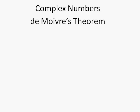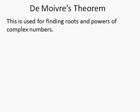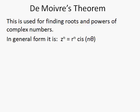In this video we are looking at complex numbers and in particular De Moivre's Theorem. This is used for finding the roots and powers of complex numbers. In general form, any number raised to a power is found by raising the modulus of that number to the power and multiplying the argument, the angle, by that number.